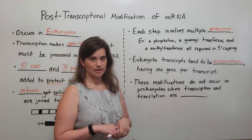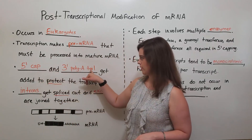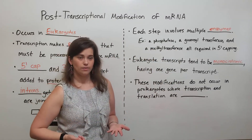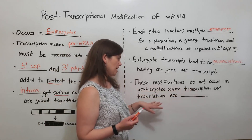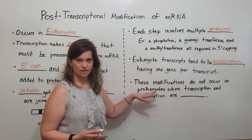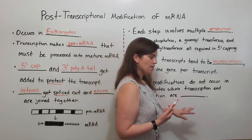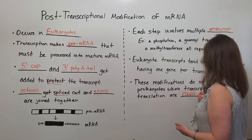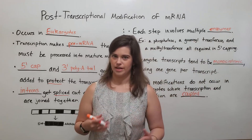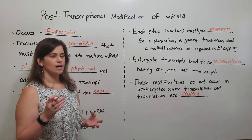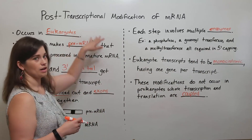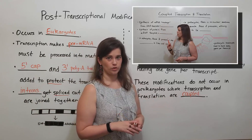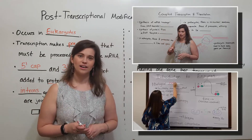These modifications — the 5' cap, the 3' poly-A tail, and the splicing — do not occur in prokaryotes at all. They don't occur in prokaryotes because transcription and translation in prokaryotes, which are bacteria and archaea cells, are coupled, meaning they are actually happening at the same time, so there is no space or time for these kinds of modifications to occur. If you're interested in learning more about coupled transcription and translation in prokaryotes, please see my video on that topic.